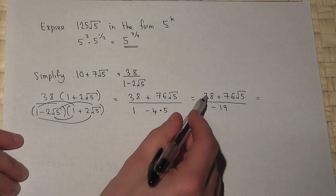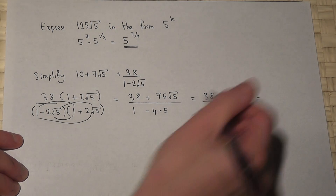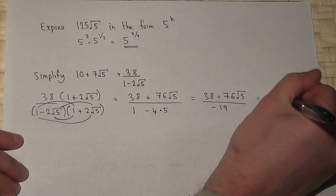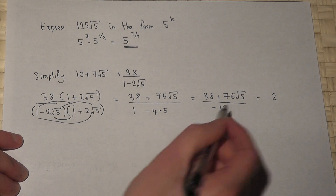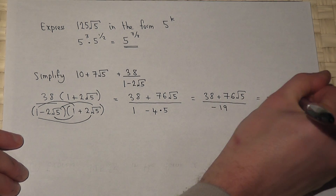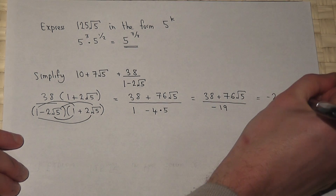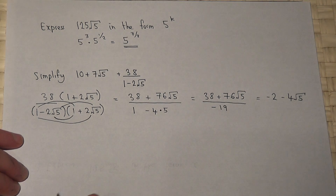So 38 over minus 19 is minus 2, and 76 root 5 over minus 19 becomes minus 4 lots of root 5.